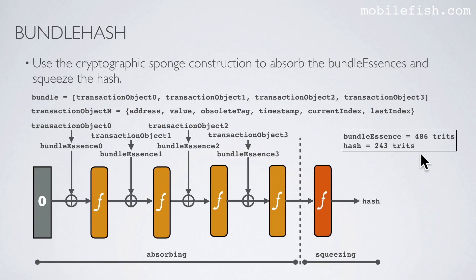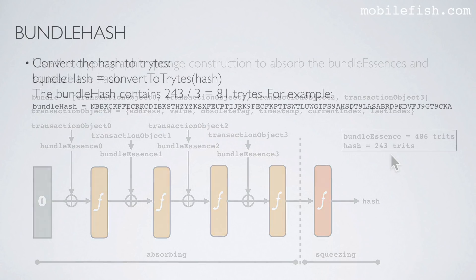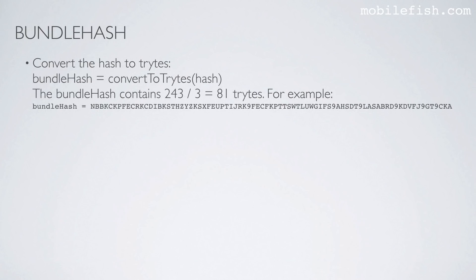The bundle essence has 486 trits, and the squeezed hash has 243 trits. Next, convert the hash to trits. As you can see, the bundle hash contains 81 trits. This is an example of a bundle hash containing 81 trits.